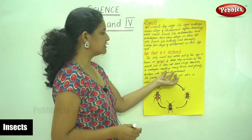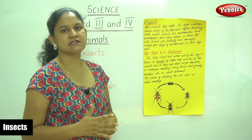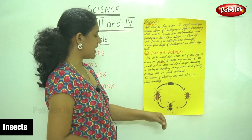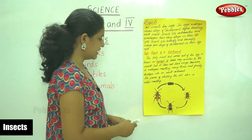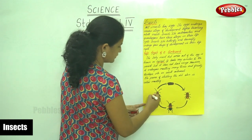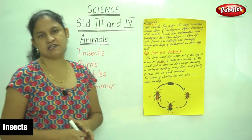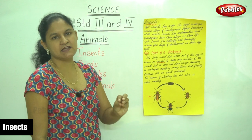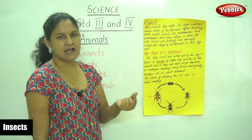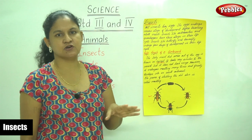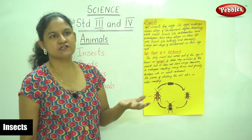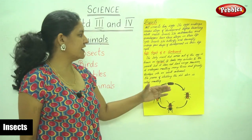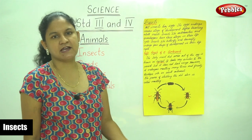However, it undergoes a stage called molting many times and finally develops into an adult cockroach. So the baby insect that comes out of the egg is known as the nymph, and it looks similar to the parent but it does not have wings. After it undergoes molting several times, it finally develops into an adult cockroach.